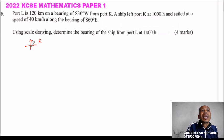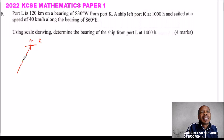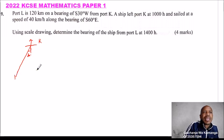L is 120 km on a bearing of South 30 degrees West from K. So we have 30 degrees measured from south toward west. This angle here is 30 degrees, and that is port L.